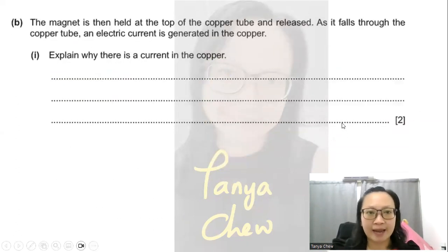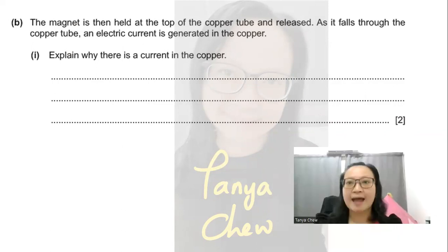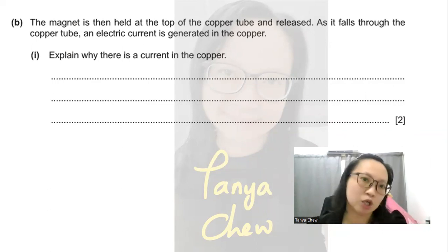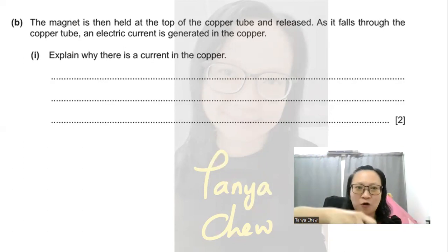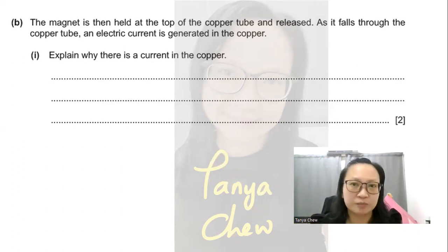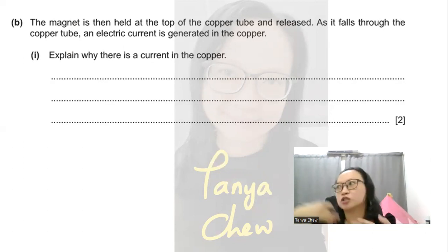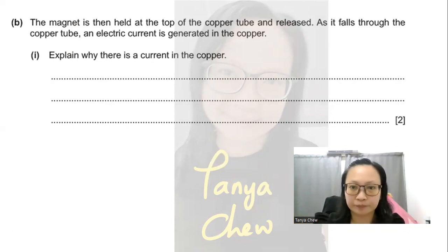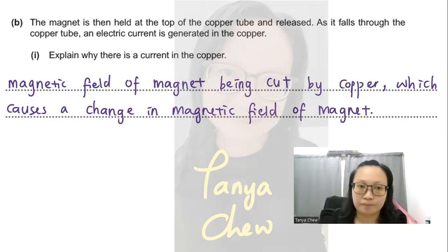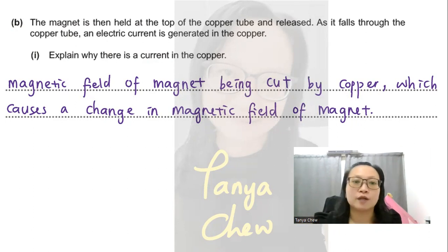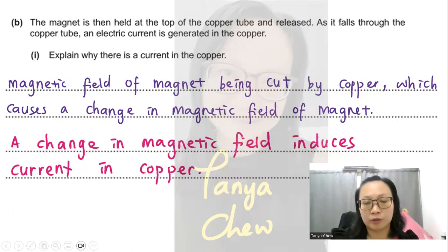Next, question B. The magnet is held at the top of the copper tube and released. As it falls through the copper tube, an electric current is generated in the copper. Explain why there is a current in the copper. Copper is a conductor. When the magnet falls, the magnetic field of the magnet is cut by the copper, causing a change in the magnetic field. This change in magnetic field induces a current in the copper.